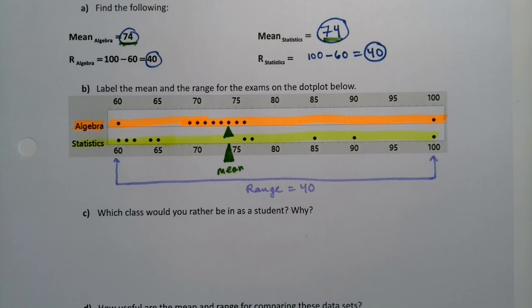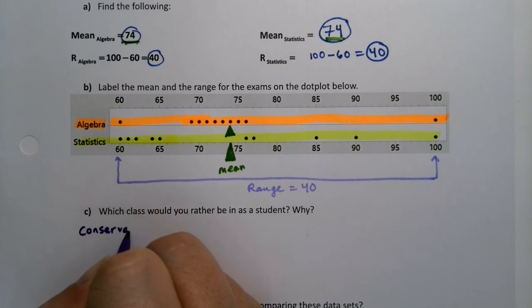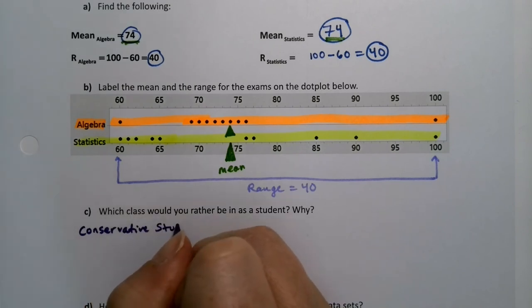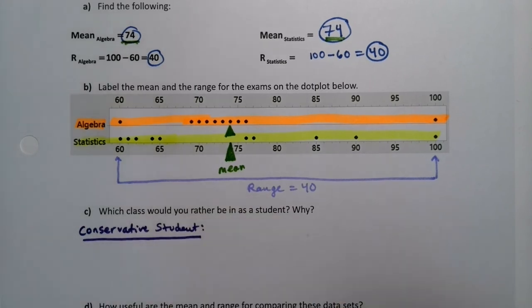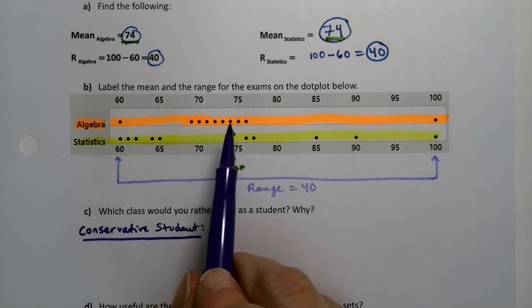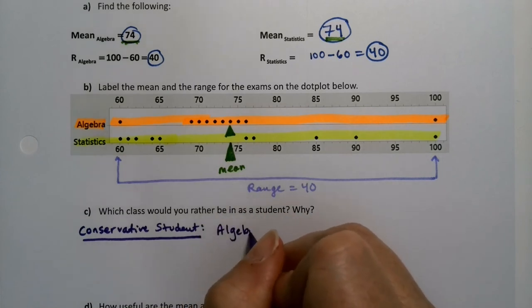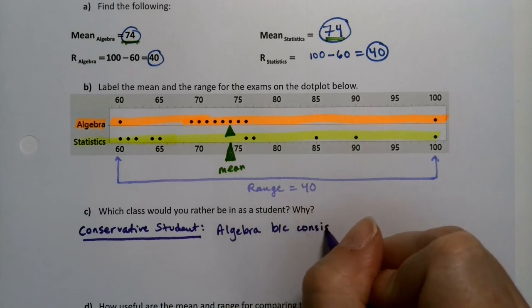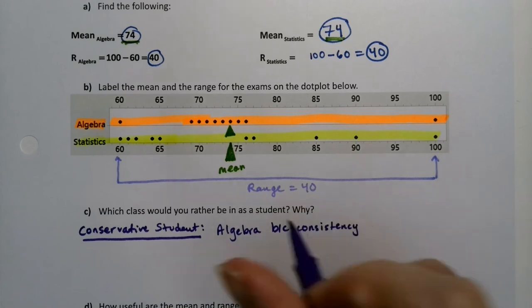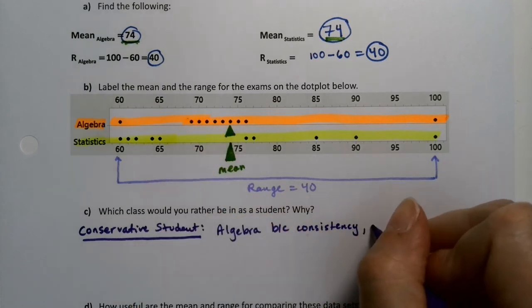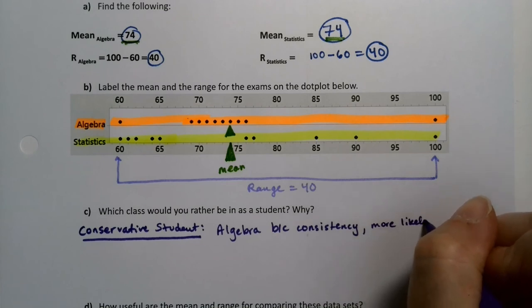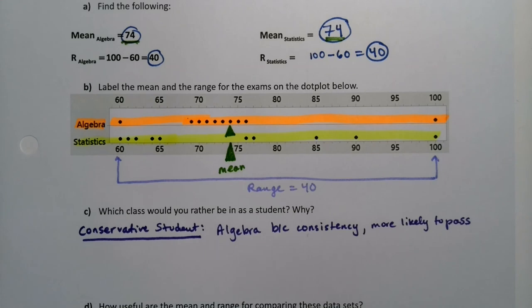Well, there's no one right answer for this. It's kind of up to you. If you're a conservative student, and I mean that small C conservative, this is not political. This is more, you're not a risk taker. So if you're a conservative student, then you would probably rather take the algebra class, because there's a lot of consistency in that class. Because there's a lot of consistency and a lot of passing, there's a lot of people passing right there.